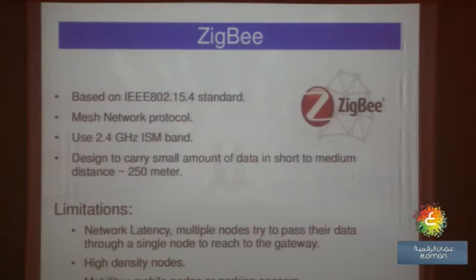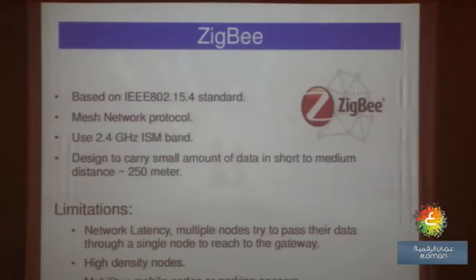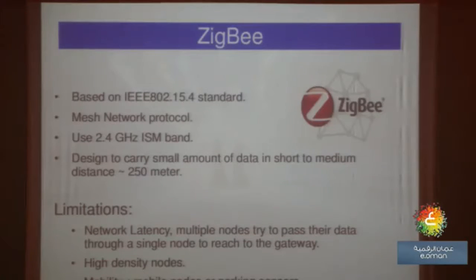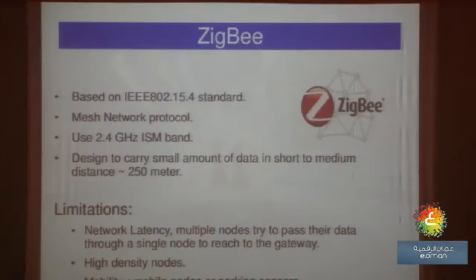For ZigBee, it's based on IEEE 802.15.4 standard and uses a mesh network protocol on the 2.4 GHz frequency band. It is designed to carry a small amount of data over short to medium distances, with a maximum range of 250 meters. ZigBee has some limitations regarding network latency, high density nodes, and mobility.